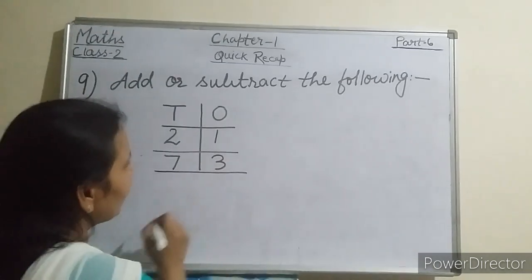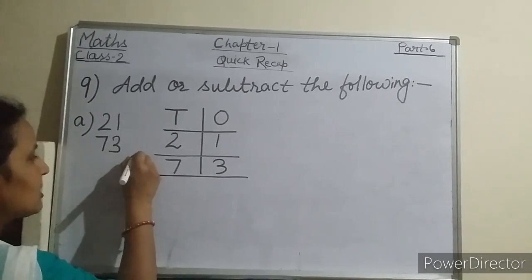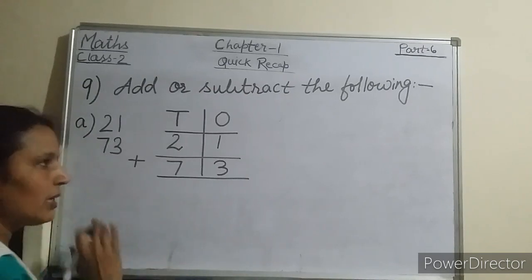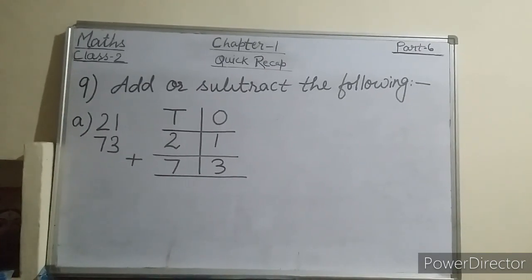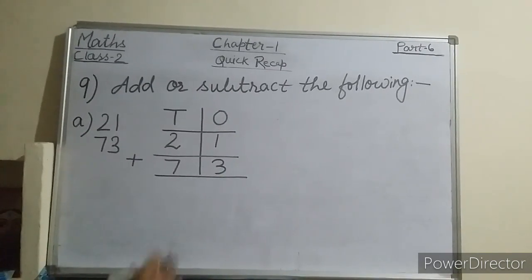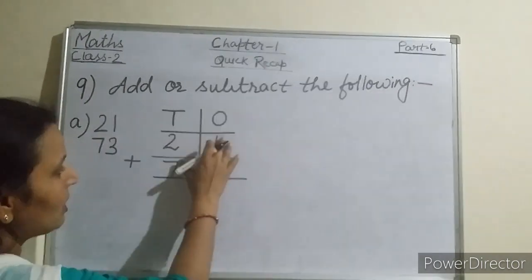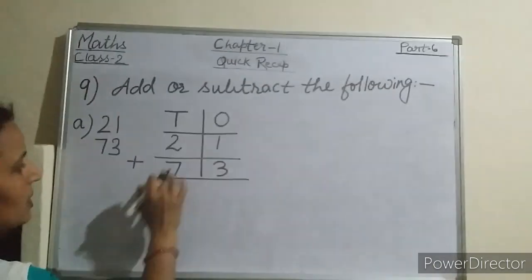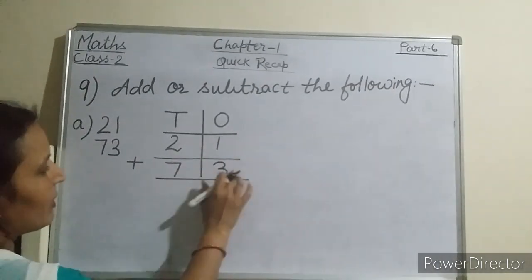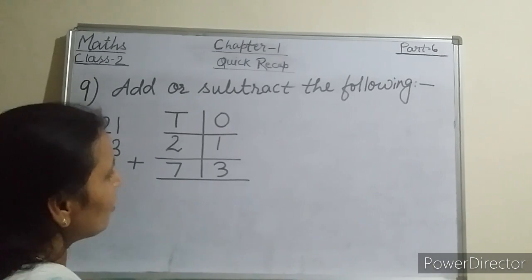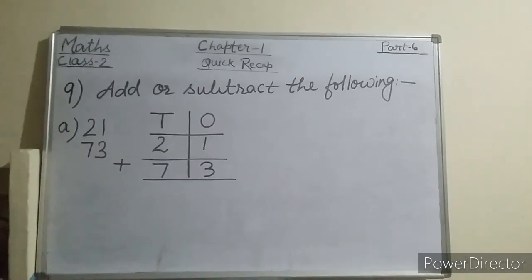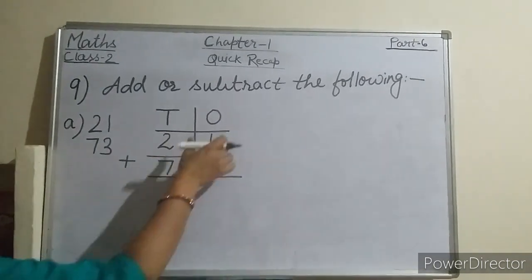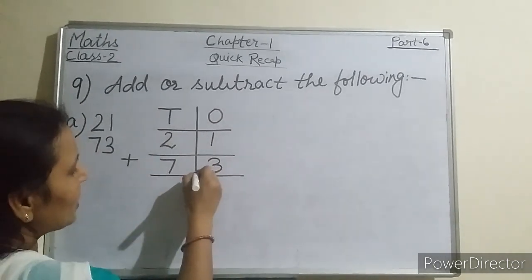What we have to do? We have to add. This is the addition sign. We already know that addition means putting things together or putting these numbers together. We will add these numbers: 21 plus 73. One more thing — the operation of addition begins from the ones place. So start from the ones place.